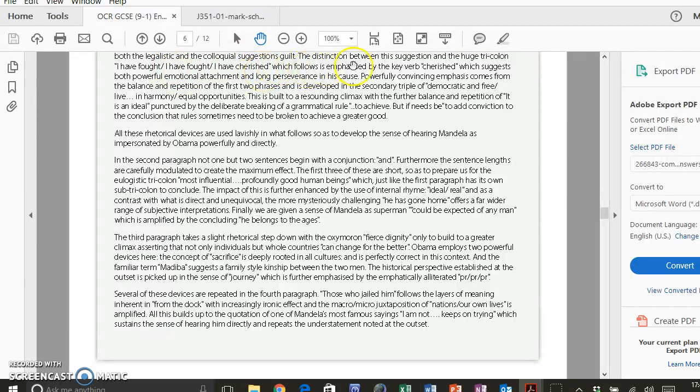'The distinction between this suggestion and the huge tricolon, I have fought, I cherished, which follows, is emphasized by the key verb cherished.' Okay, so what the student's doing here is quite clever. They picked up on a structural device of a tricolon, and then they've actually picked up on the language here. They dig deeper into the language. So try and do that yourself: pick up on perhaps a longer structural device and then the language, 'which suggests both powerful emotional attachment and long perseverance in his cause. Powerfully convincing emphasis comes from the balance and repetition of the first two phrases, and is developed in the secondary triple of the democratic and free, live in harmony, equal opportunities.'